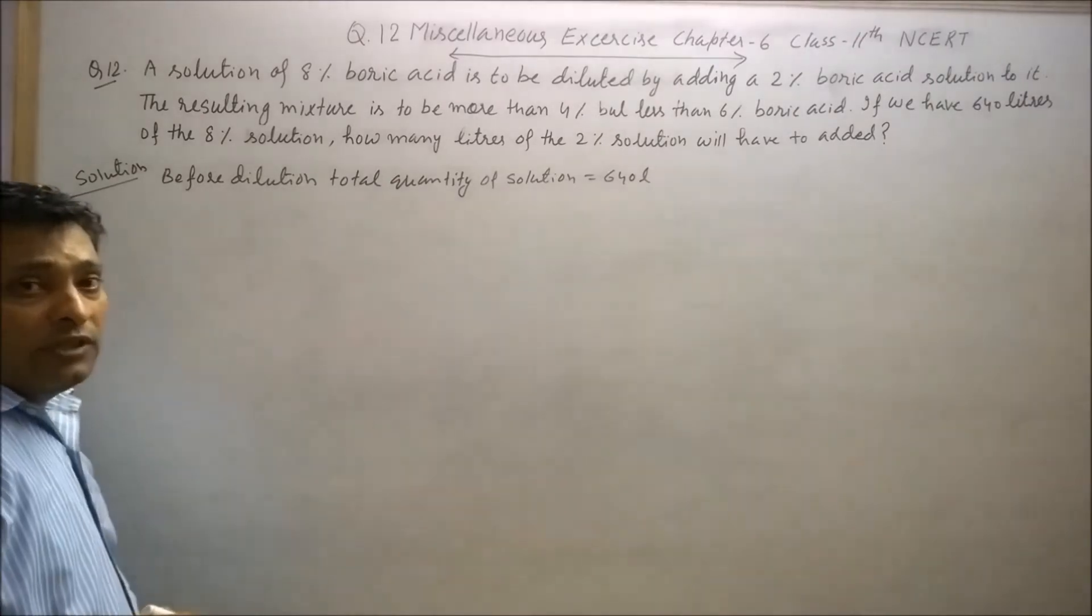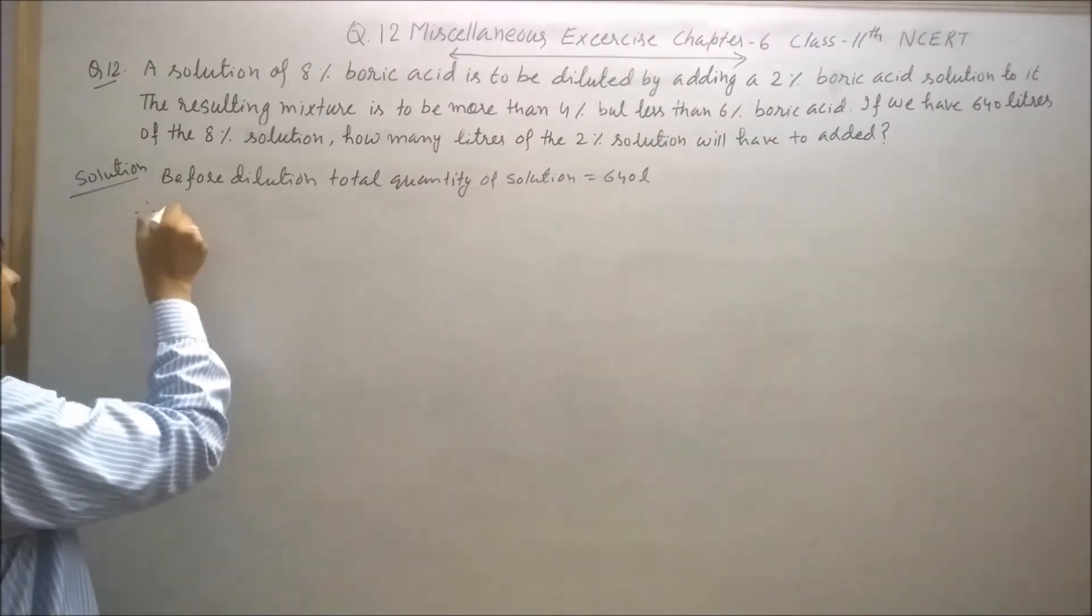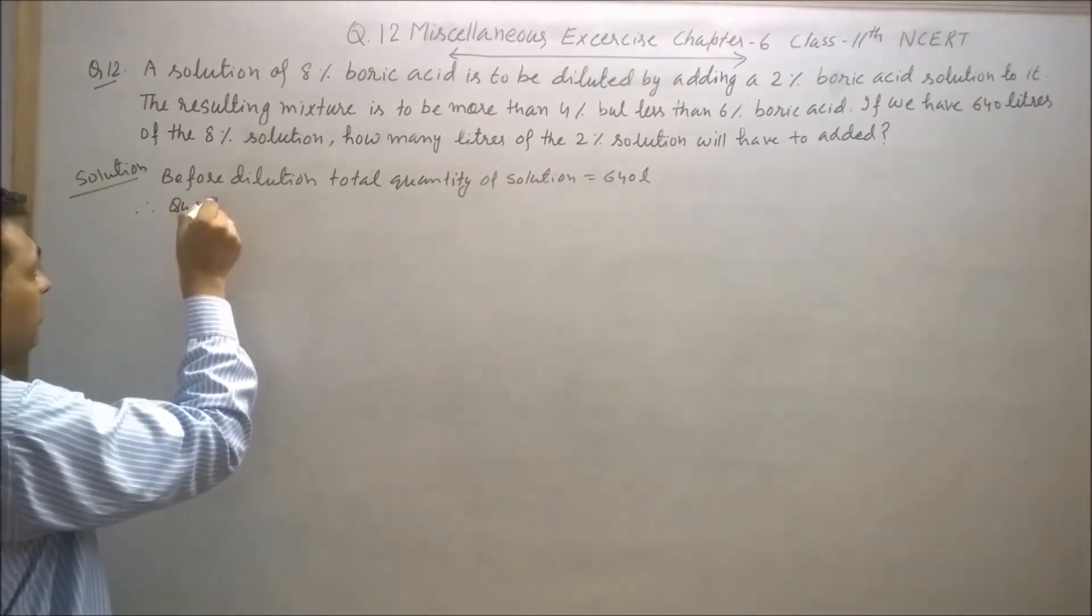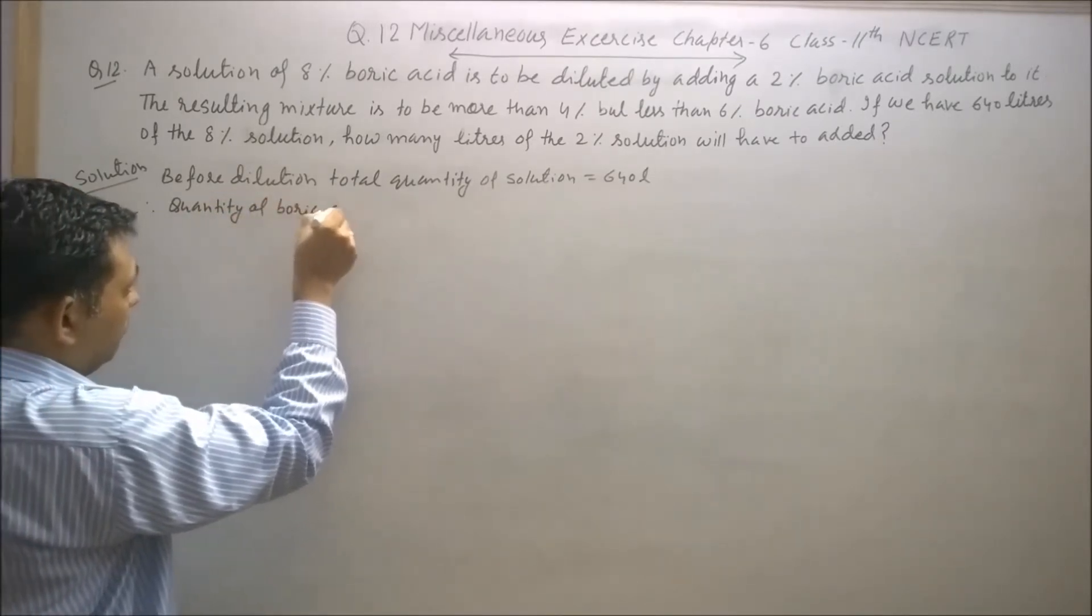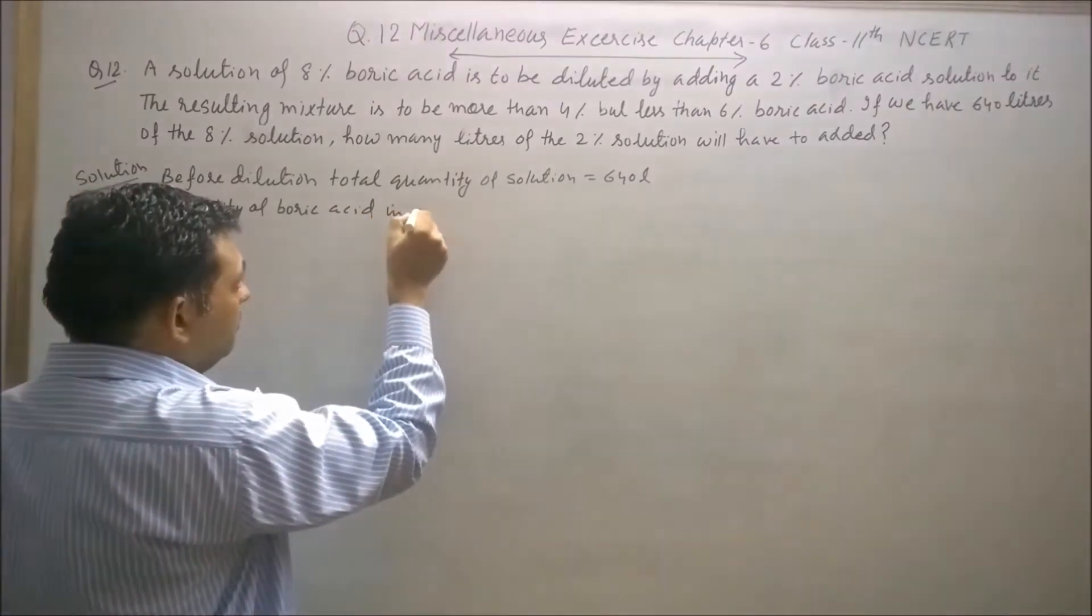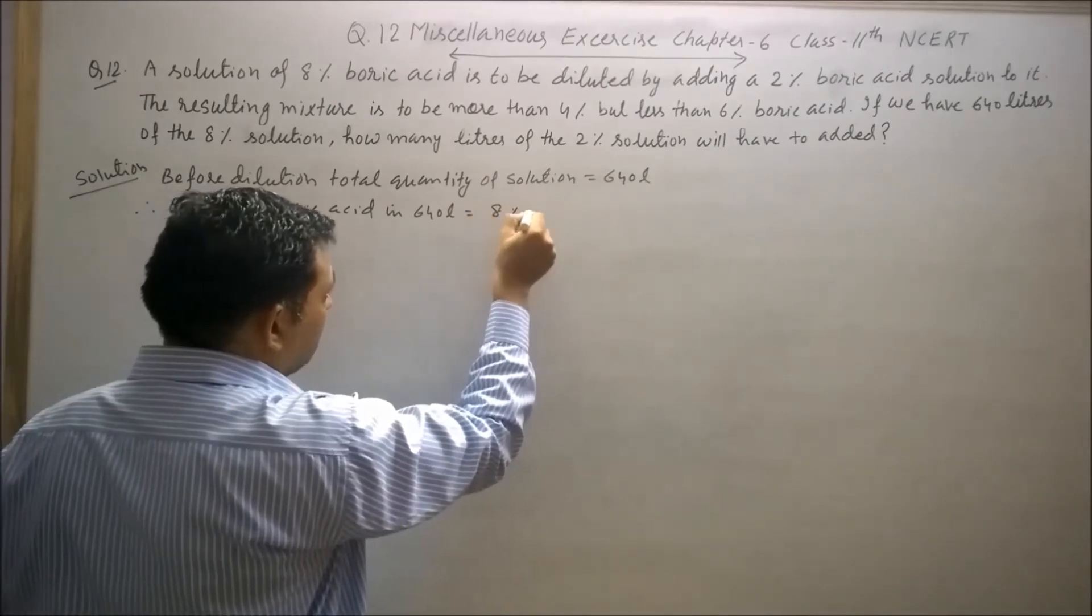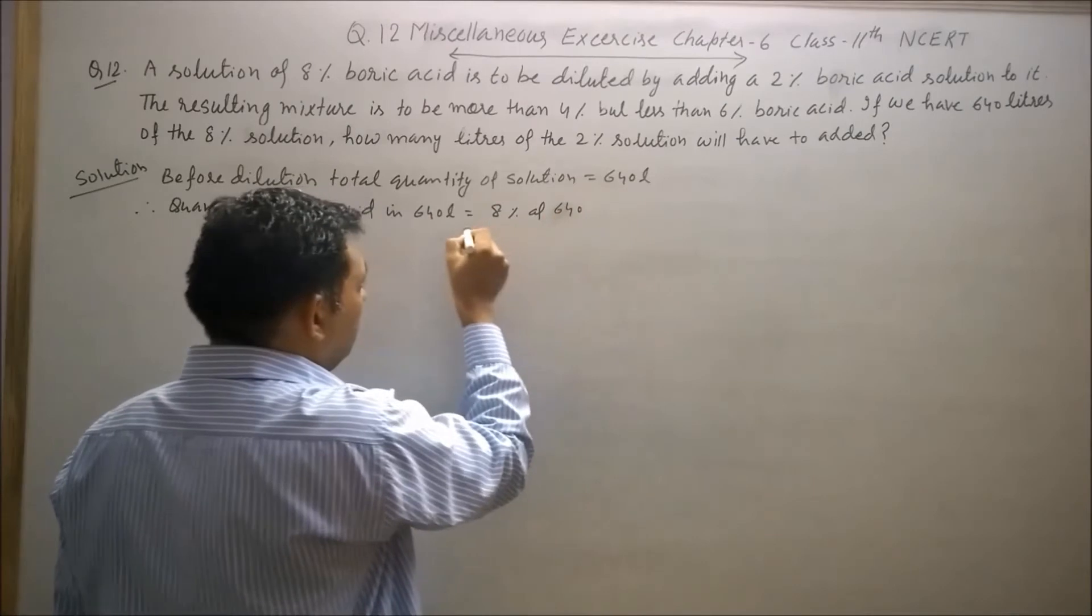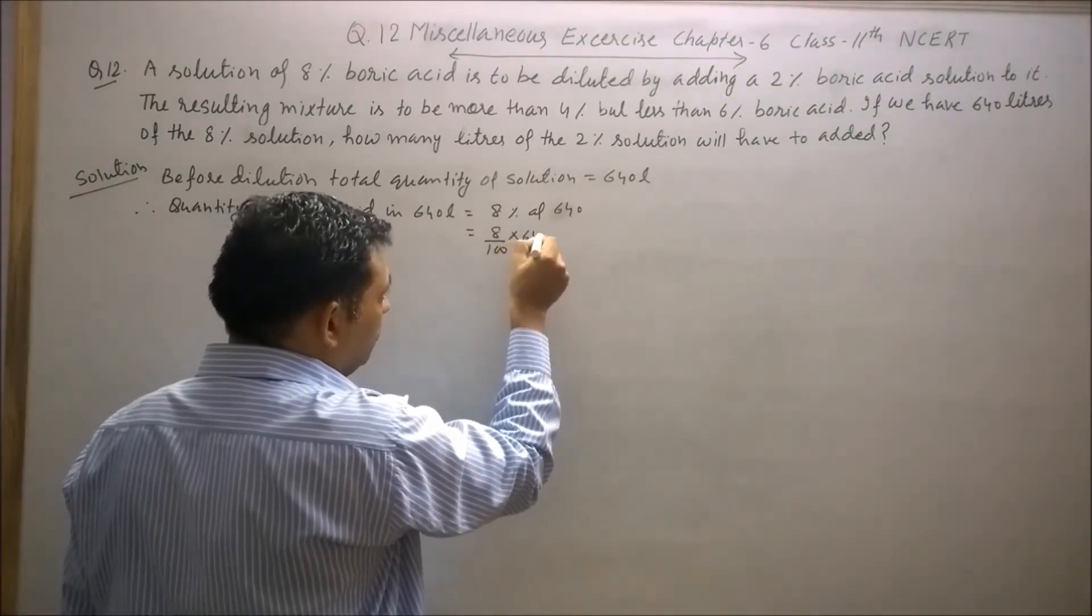In 640 liters, the boric acid is 8%. Therefore, quantity of boric acid in 640 liters is 8% of 640 liters, which means 8 upon 100 into 640 liters.